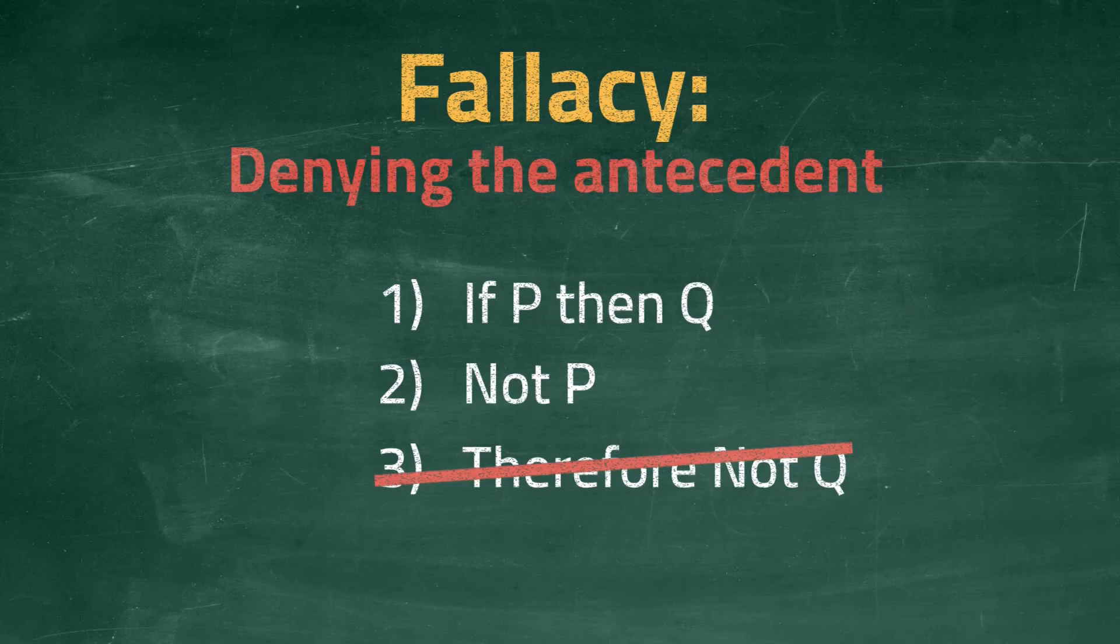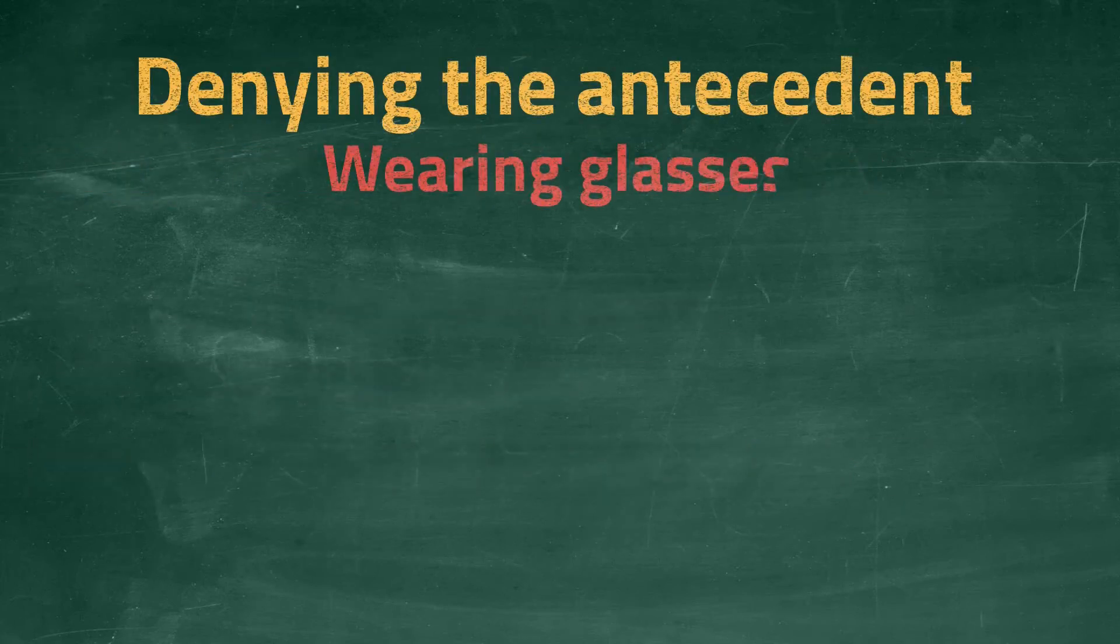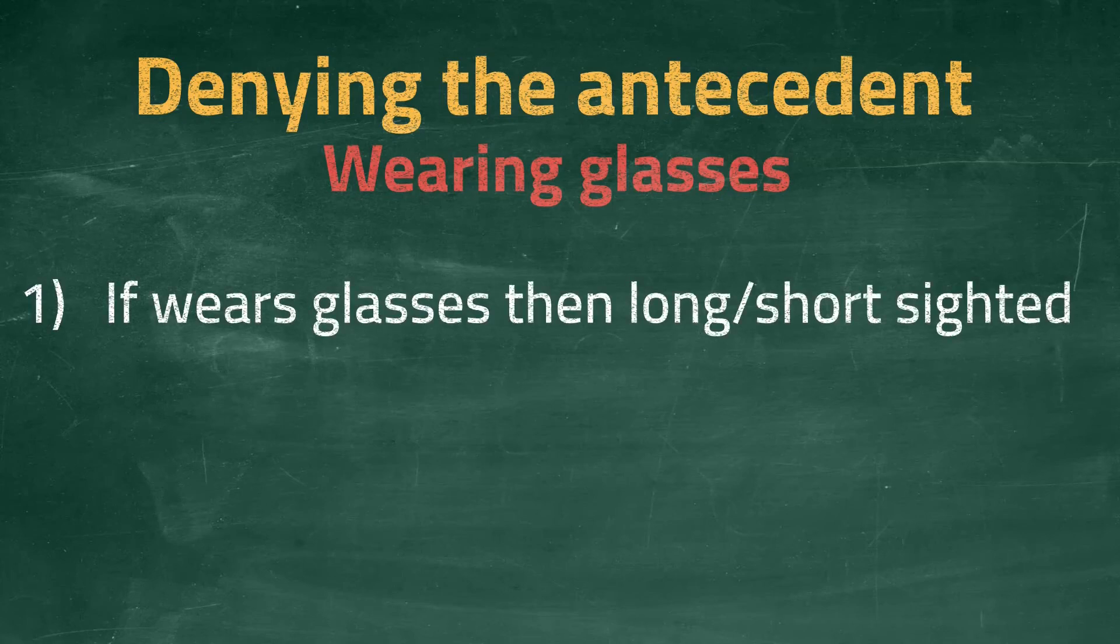Let's look at a concrete example. Using the same scenario of people wearing glasses to correct their vision, let's look at the syllogism. We begin with the same premise. If I wear corrective glasses, then I must be long or short-sighted. If we agree this to be correct, we can move on to the next statement.